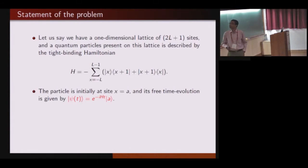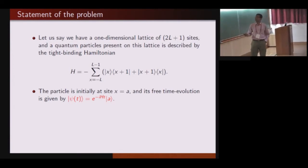This is the specific model. The particle follows a tight binding Hamiltonian, so it can hop from x+1 to x, or from x to x+1. We are considering a one-dimensional lattice which has 2L+1 sites. There is an origin at which we will place the detector, and there are L sites to the left and L sites to the right of the origin. In absence of any detector, the particle should follow unitary evolution given by e^(-iHt) operator. Initially, if the particle is at site A, the initial wave function is given by this ket A.